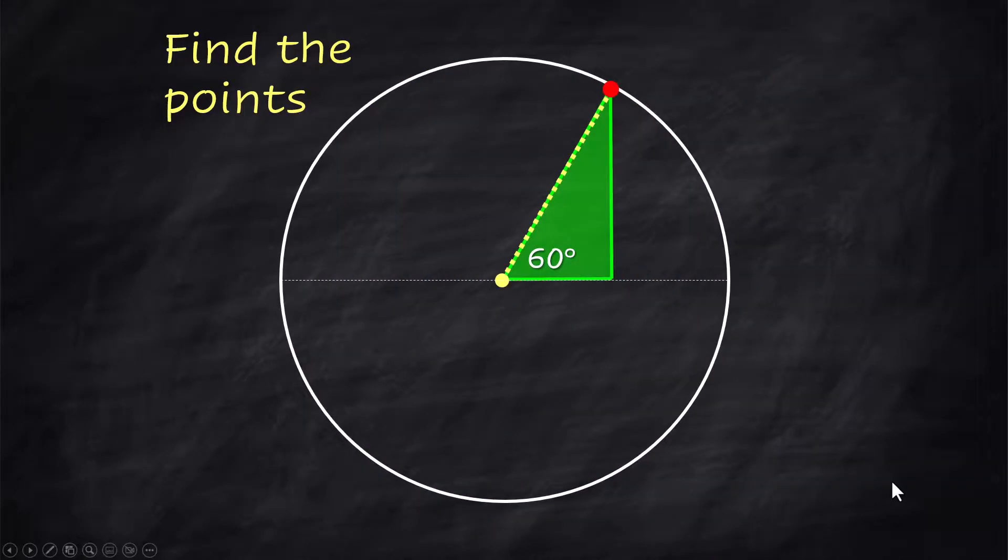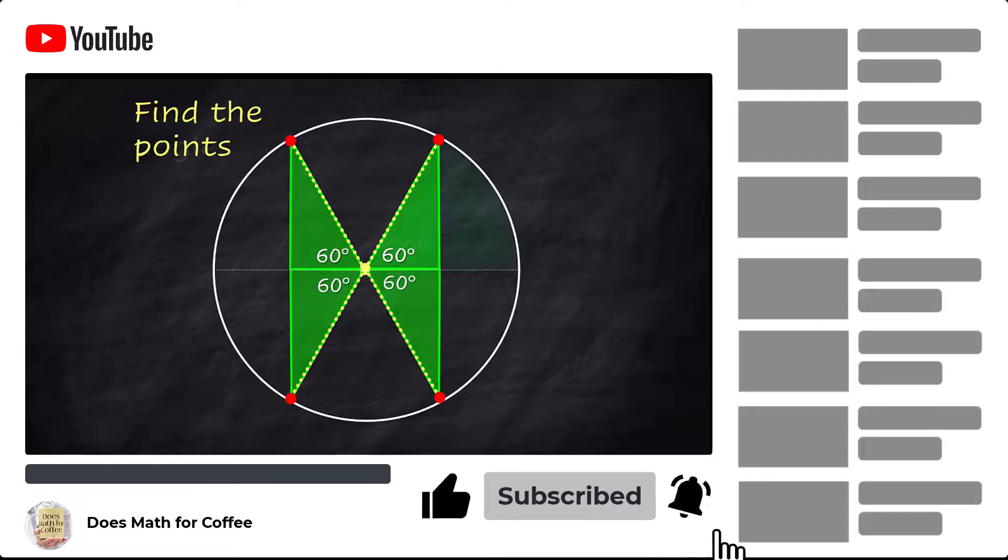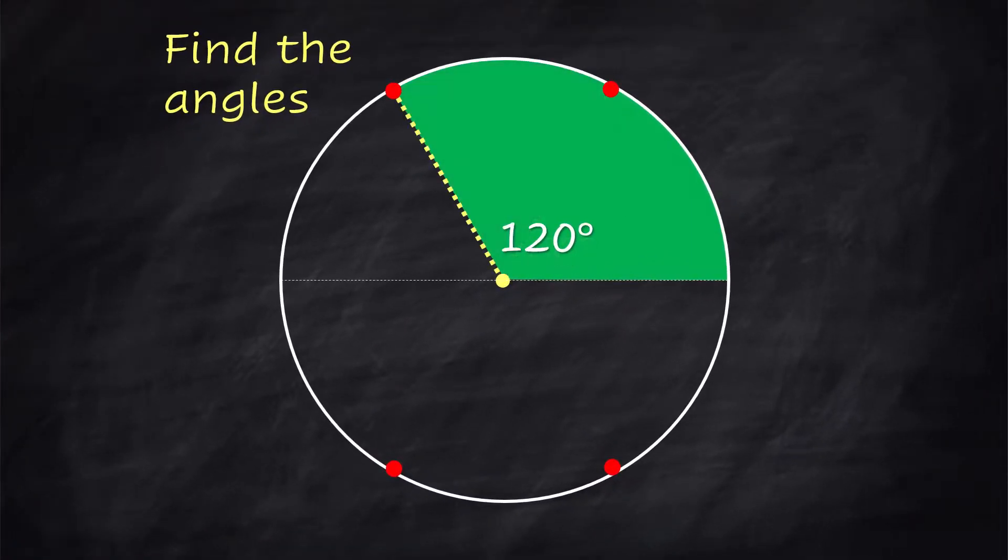All right, let's do the same thing with the 60-degree triangle. First, we rotate the triangles around so that we can find the four points. The first angle will be 60 degrees. The second angle in the second quadrant is 120. Think 180 minus 60.